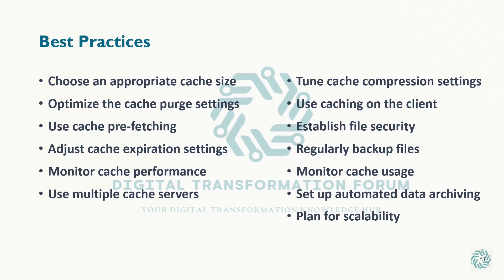Establish file security and access rights to ensure that only authorized users can access specific files. Establish groups that reflect job responsibility and assign access rights accordingly. Regularly back up files to protect against data loss, and set up an automated backup schedule to ensure that files are backed up regularly. Monitor cache usage regularly to identify any issues or bottlenecks and to identify performance issues before they affect users. Use automated data archiving to move older, less frequently accessed data to lower-cost storage, which frees up space on your primary storage and reduces cost.